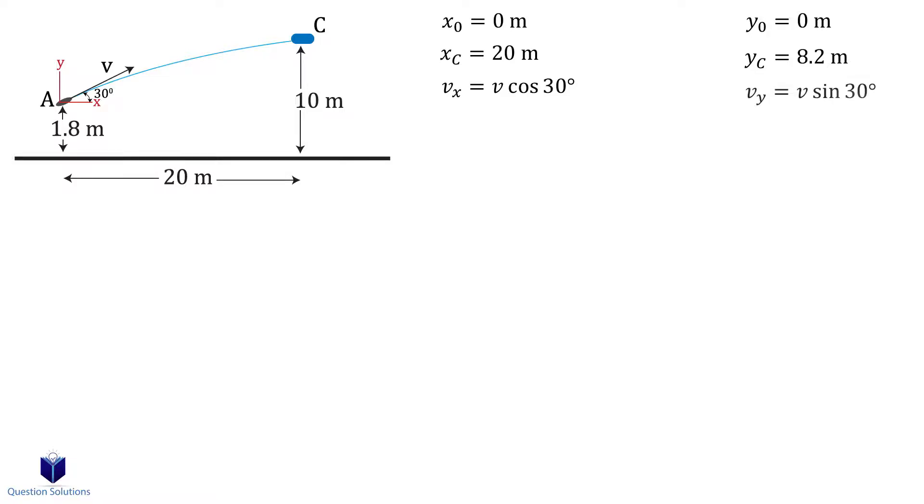The velocity is v sin 30 degrees. Gravity is also a factor so we have negative 9.81 meters per second squared.